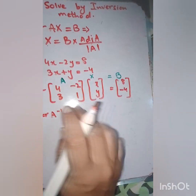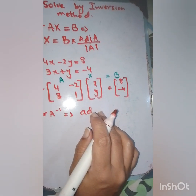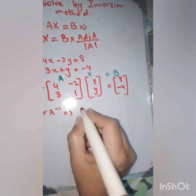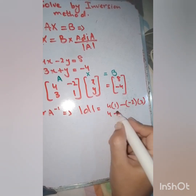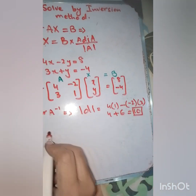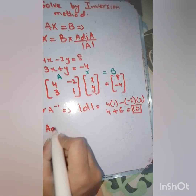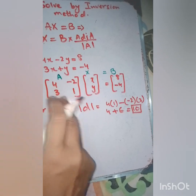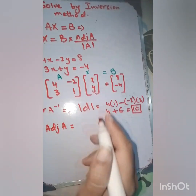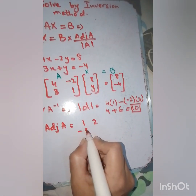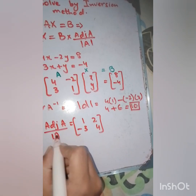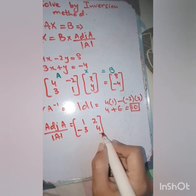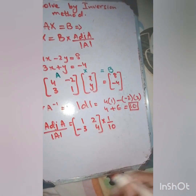For A inverse, we first take the determinant of A using ad minus bc: 4 times 1 minus 2 times 3, which is 4 minus 6, giving us negative... wait, 4 times 1 is 4, and 2 times 3 is 6, so determinant equals 4 minus negative 6... the determinant is 10. For the adjoint of A, we swap the diagonal entries and change the signs of the off-diagonal entries, giving adjoint of A as: 1, 2, minus 3, 4.